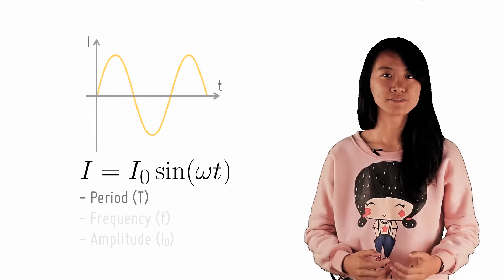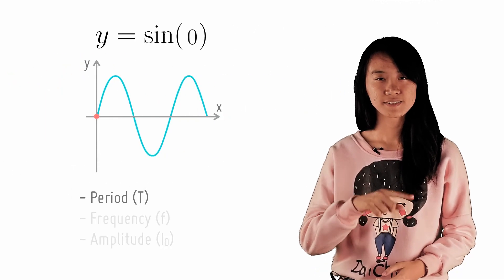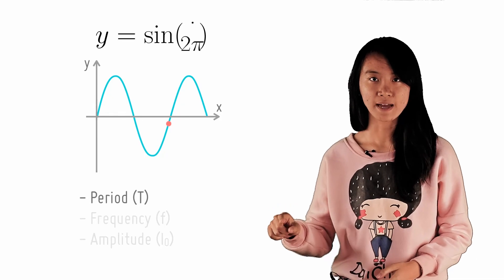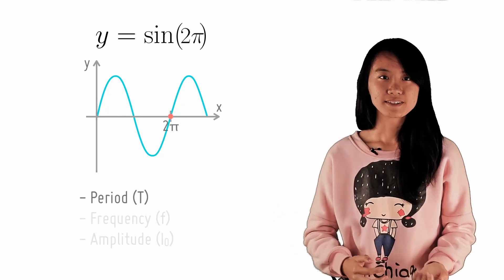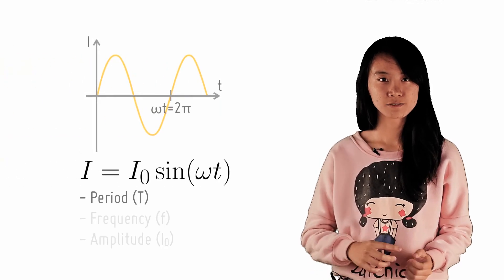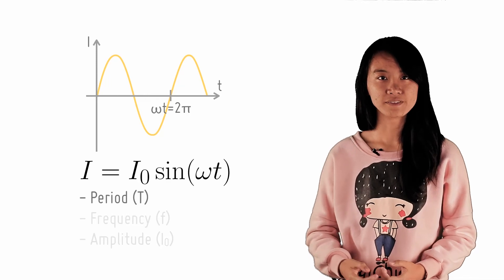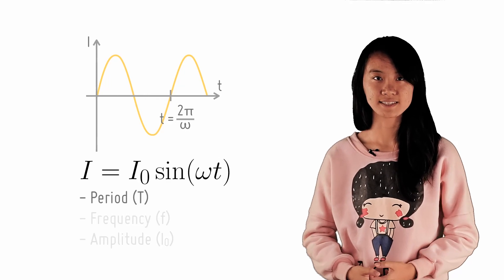Let's consider for a moment just a sine graph. Recall that as we cycle through the values of x, the first cycle ends at x equals 2π. Now when we look back at the current graph, we will thus have ωt equals 2π at the end of the first period, and hence t equals 2π over ω, which is the period of this AC graph current.